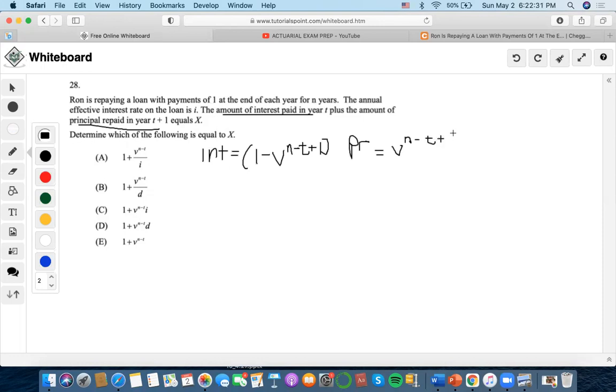Because it would make sense - we know that a payment equals interest plus principal. So if we were to add both of these, we would only get 1 left, which is denoted as the standard amount of a payment, which is 1.